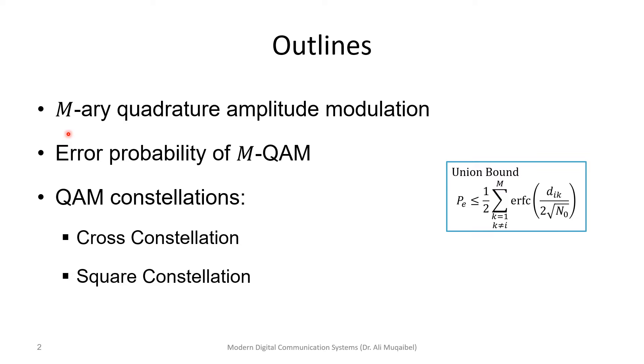We look at M-ary Quadrature Amplitude Modulation, the error probability, and the two main types of constellation: the cross constellation and the square constellation.